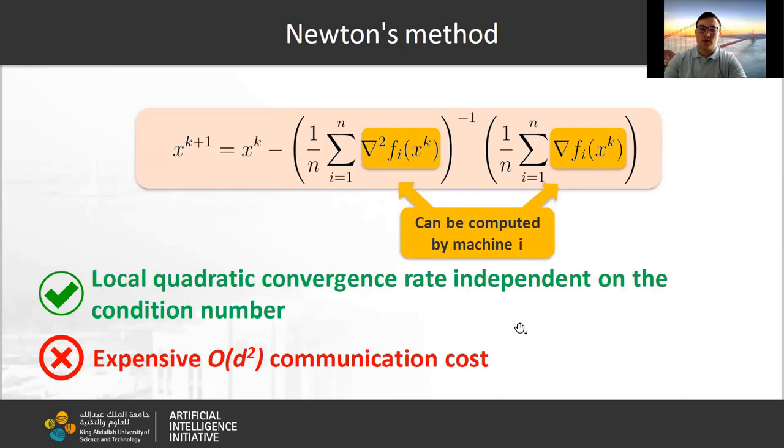Let's briefly look at standard Newton method. It has local quadratic convergence rate independent of the condition number, but the communication cost is too expensive. It is O(d²).